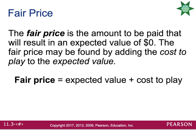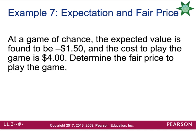Another concept in this section is fair price. The fair price is the amount to be paid that results in an expected value of $0. The fair price can be found by adding the cost to play to the expected value. For example, at a game of chance the expected value is found to be negative $1.50, and the cost to play the game is $4. To calculate the fair price, you take the expected value plus the cost to play the game, giving a fair price of $2.50.